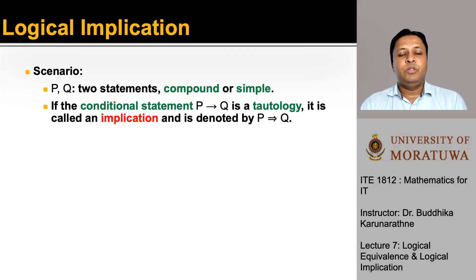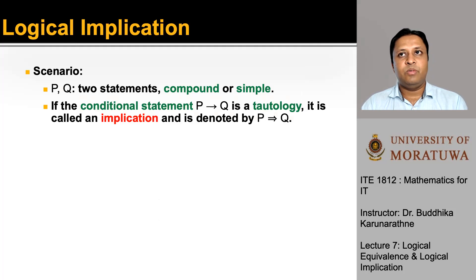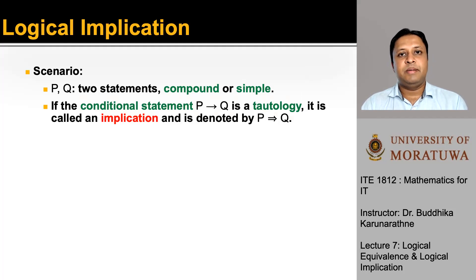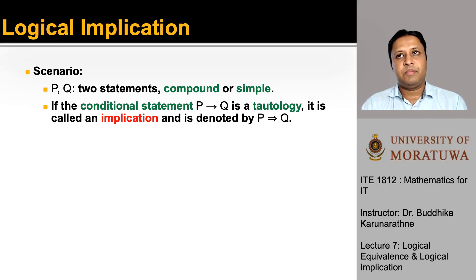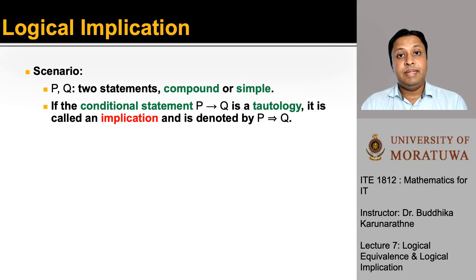We now move on to another concept: logical implication. Previously we looked at logical equivalence. With logical implication, we take two statements P and Q — which can be compound or simple — and if the conditional statement P→Q is a tautology, it is called an implication, and it is denoted by the single arrowhead notation P implies Q.